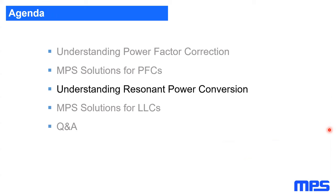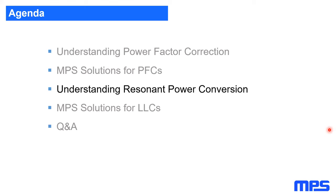That's it for power factor correction — we're about halfway through the presentation. Let's now move on to the LLC and in general resonant power converters. The reason we consider resonant conversion is that when output power increases, classical structures like the flyback become too inefficient, so we go to resonant converters for higher efficiency.